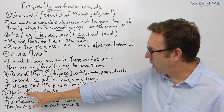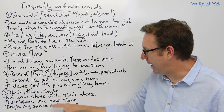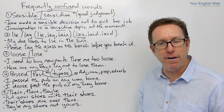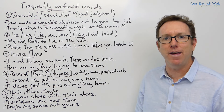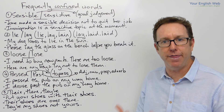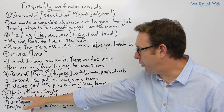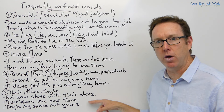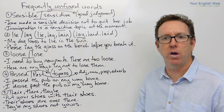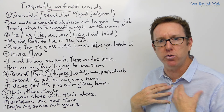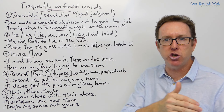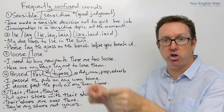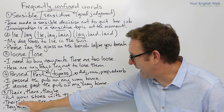And the last one is their, there, and they're. Confusion again comes from the pronunciation — their, there, they're. First example: Put your shoes with their shoes — possessive. Their shoes. My shoes, your shoes, his shoes, her shoes, their shoes.